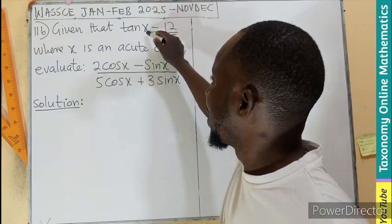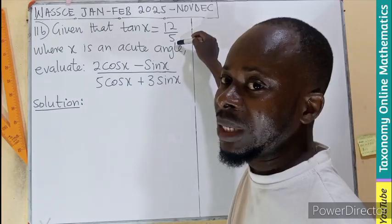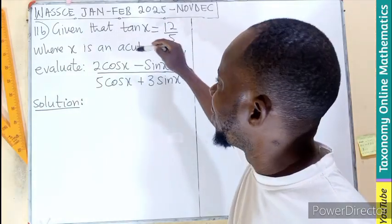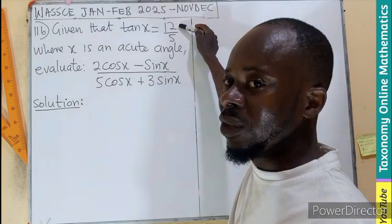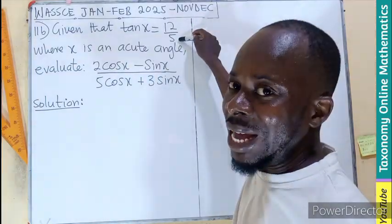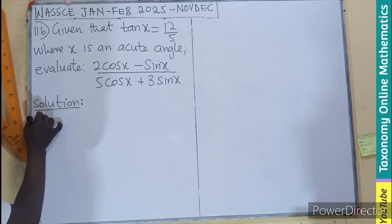Now that we have been given the tan x as a fraction, remember the tan is a ratio comparing the opposite side of the triangle to the adjacent. So let's make a sketch of what that will look like.